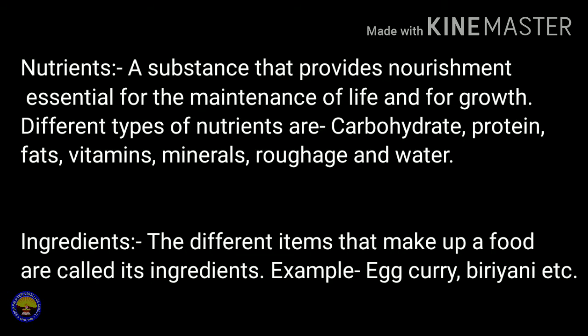The second term is ingredients. The different items that make up a food are called its ingredients. For example, egg curry is made up of egg, potato, spices, and water. So egg, potato, water, and spices are known as the ingredients of egg curry.